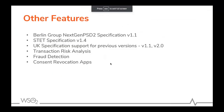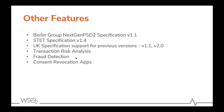These additional features also come with our new release — features we completed during last year but included in the new release. That is: Open Banking Berlin Group Next Gen PSD2 specification 1.1 support, STET specification 1.4, UK specification support for previous versions, Transaction Risk Analysis, Fraud Detection, and Consent Revocation apps.